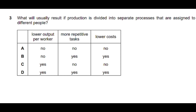Question number three: what will usually result if production is divided into separate processes assigned to different people? When production is divided, we call it specialization or division of labor — one person performs one task. Option A (lower output per worker) is incorrect, so we cross out options A and B initially.